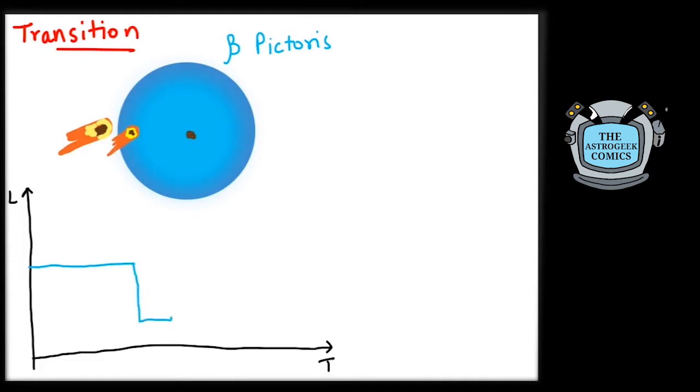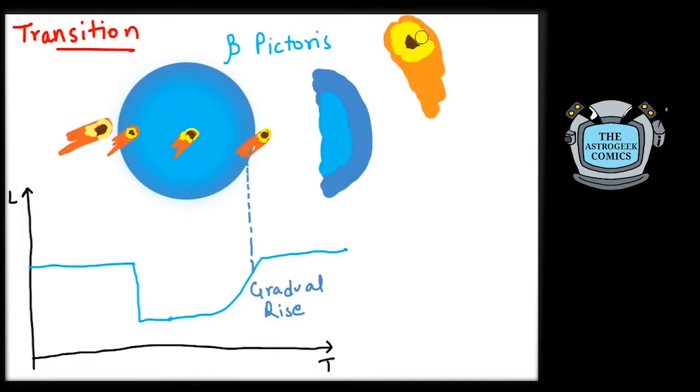But since a comet has an extended tail which blocks light but is not entirely opaque, as the comet moves away, the brightness of the star doesn't suddenly rise up but does so gradually. This gradual rise is because of the tail of the comet, which allows only some light to pass.